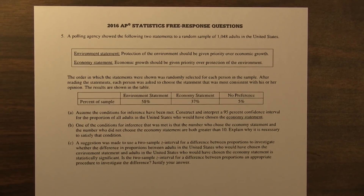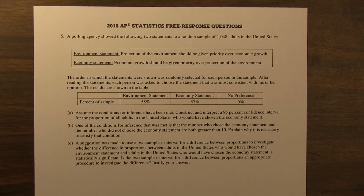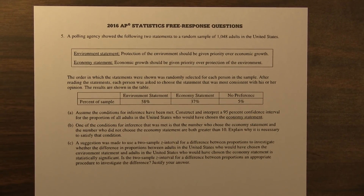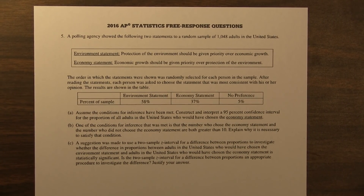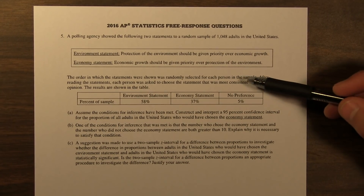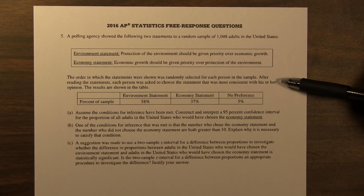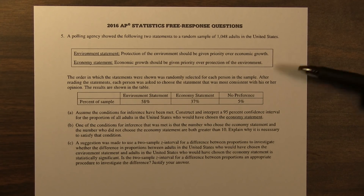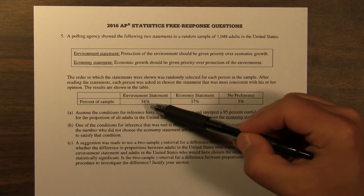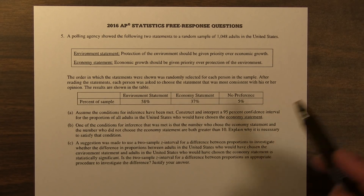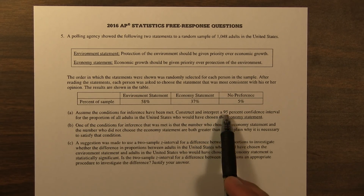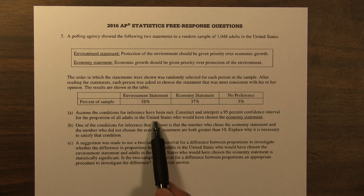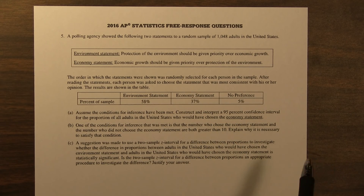Question 5 says a polling agency showed the following two statements to a random sample of 1,048 adults in the U.S. The environmental statement says protection of the environment should be given priority over economic growth, and the economy statement says economic growth should be given priority over protection of the environment. The order was randomly selected for each person, and each person chose the statement most consistent with their opinion. The results are shown in the table. Construct and interpret a 95% confidence interval for the proportion of all adults in the U.S. who would have chosen the economy statement.